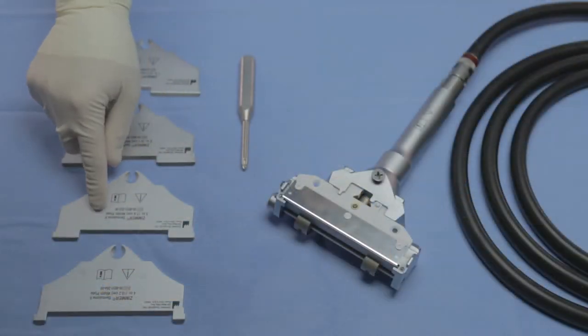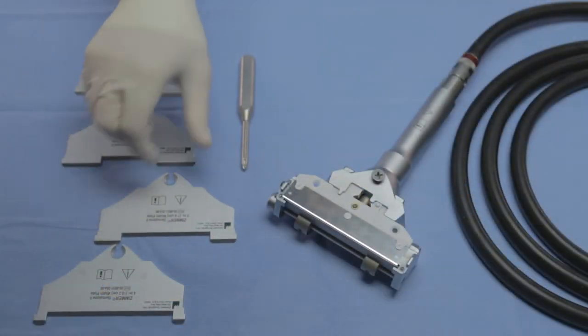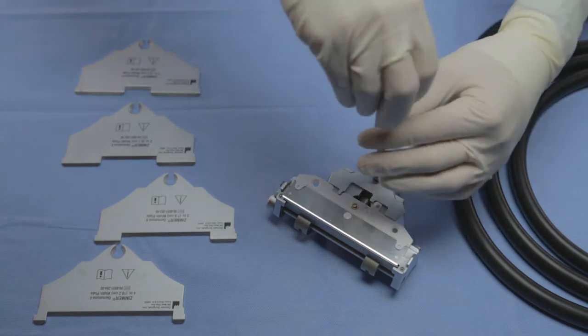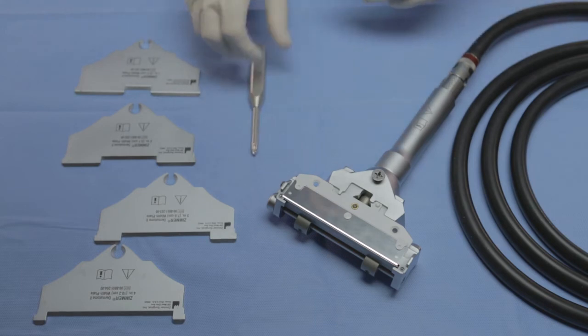Select the proper width plate as directed by the surgeon. Using the Zimmer screwdriver, loosen the width plate screw approximately two turns. Do not completely remove the screw from the handpiece.